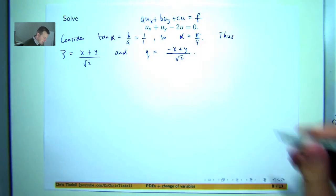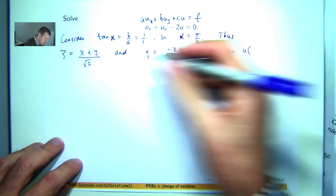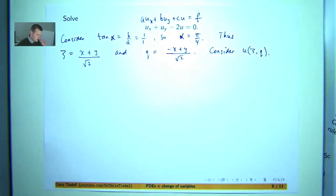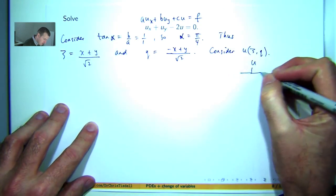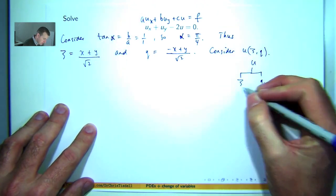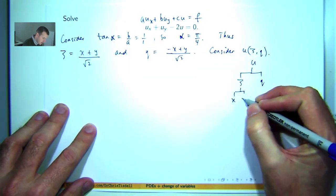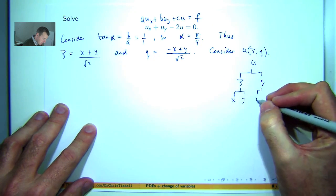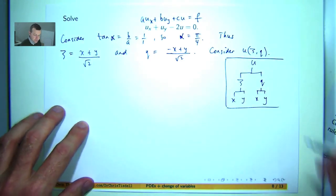Now let's consider u as a function of these new variables and compute u_x and u_y — the partial derivatives — by the chain rule. With the chain rule, I always like to draw a little diagram to look at the variable dependencies. So u depends on psi and eta, psi depends on x and y, and so does eta. We can use this little diagram to establish our chain rule.